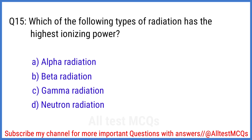Q15. Which of the following types of radiation has the highest ionizing power? The right answer is option A. Alpha radiation.